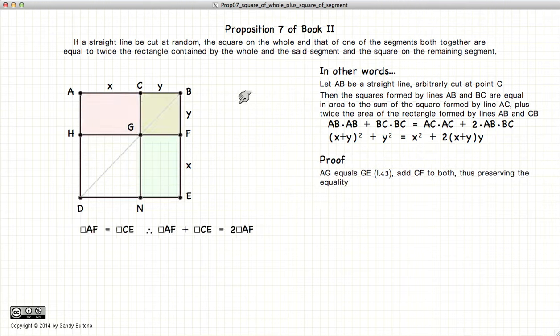Now we know from Proposition 43 that AG and GE, since they are complements of a rectangle, they are equal in area. So if we add CF to both of these complements, we maintain the equality.